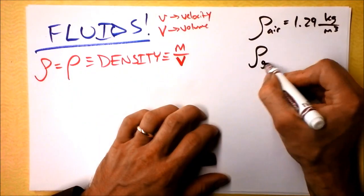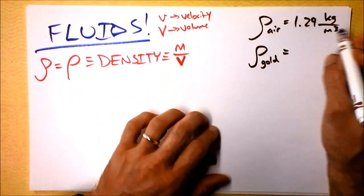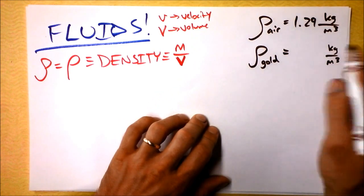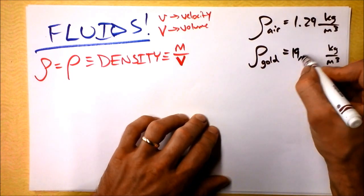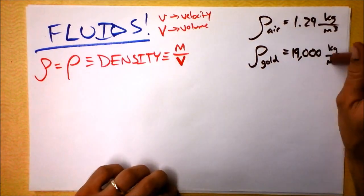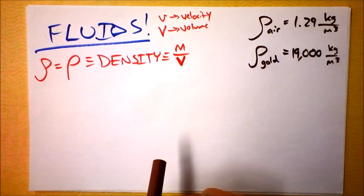What about the density of gold? Well, that's a lot more massive. Can you imagine a cubic meter of gold? It turns out a cubic meter of gold is a whole bunch of kilograms. 19,000 kilograms. How much money would that be? That's an awful lot of money. Wow, put that in the comments.